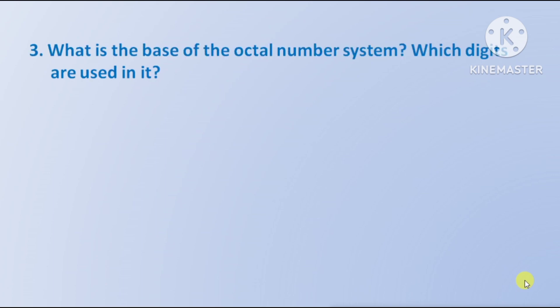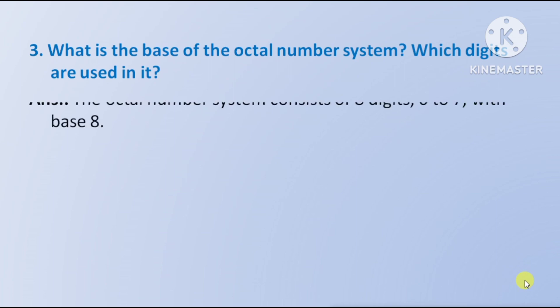Next question: what is the base of the octal number system and which digits are used in it? Answer: the octal number system consists of 8 digits, 0 to 7, with base 8.